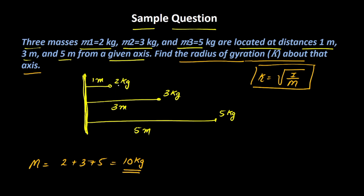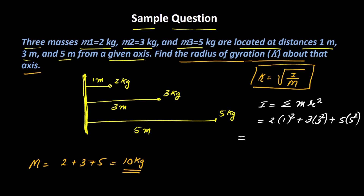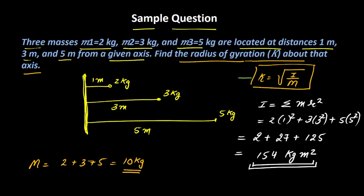Now let's find the moment of inertia of all these masses about the axis. The total moment of inertia I = ΣMr² = 2×1² + 3×3² + 5×5² = 2 + 27 + 125 = 154 kg·m². Using the formula, K = √(I / M) = √(154 / 10) = √15.4 ≈ 3.92 meters. So the radius of gyration is approximately 3.92 m.